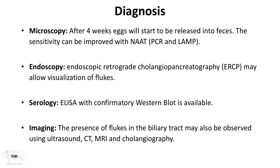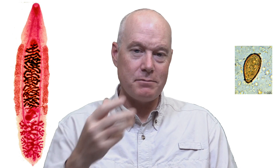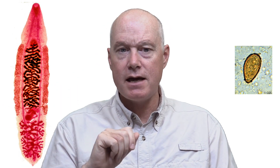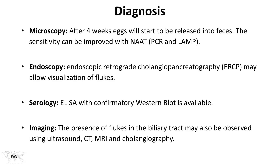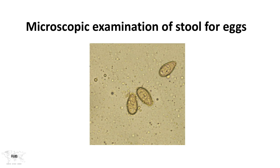For diagnosis, you want to wait about four weeks until the eggs start to be released into the feces. You can detect these under microscopy, but sensitivity can be increased with nucleic acid amplification tests — both standard PCR and the isothermal LAMP technique. Endoscopy via ERCP — endoscopic retrograde cholangiopancreatography — allows you to actually visualize the flukes in the biliary area. Serology is also available, confirmed with a western blot. On imaging — ultrasound, CT, MRI, or cholangiography — you can visualize the presence of flukes in the biliary tract.